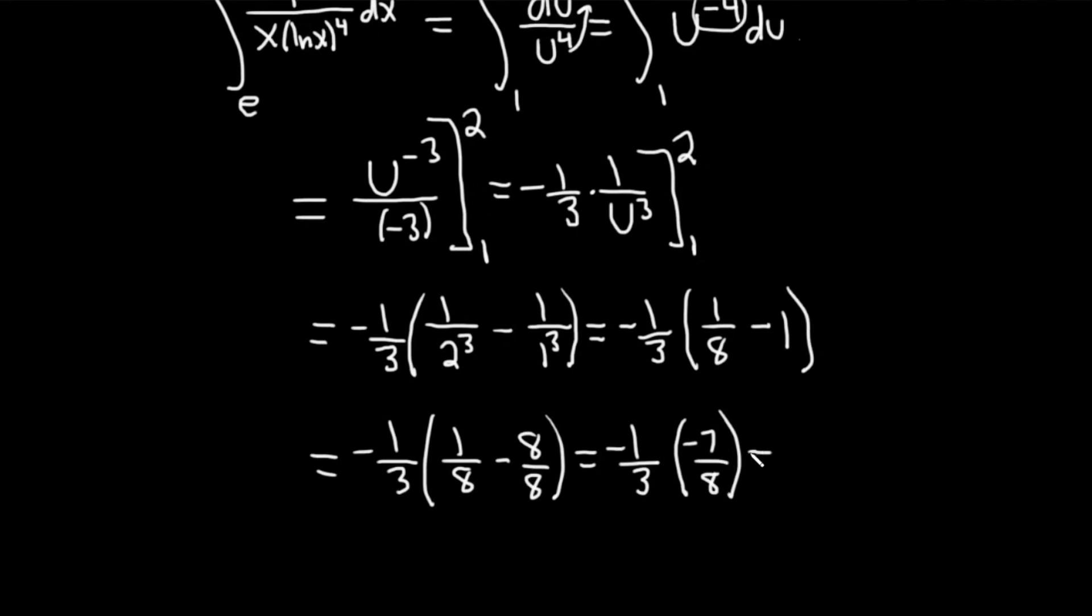This is equal to negative 1 third times, and then you can subtract now. 1 minus 8 is negative 7, then we have the 8 here. Beautiful. Now we can multiply straight across. Negative 1 times negative 7 is 7. 3 times 8 is 24. Boom, there it is. That would be the value of the definite integral in this example.